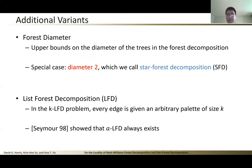This basically summarizes our main result. But we also consider some additional variants. For example, the forest diameter. The forest diameter is the diameter of trees in the forest decomposition. The special case is when the diameter is 2, where we call it a star forest decomposition. We also consider a list color variant of the forest decomposition problem, where in the k-list-FD problem, every edge is given a palette of size k. Seymour showed that a-list-FD always exists.